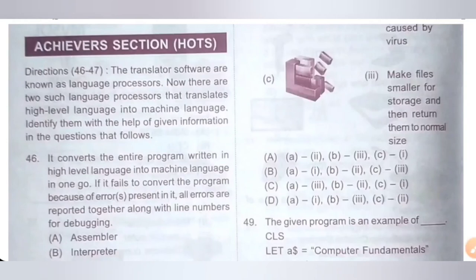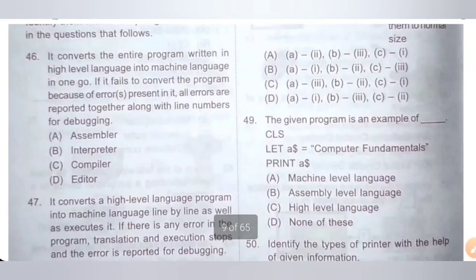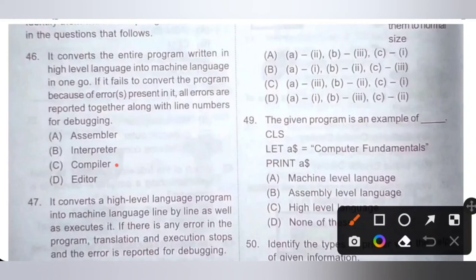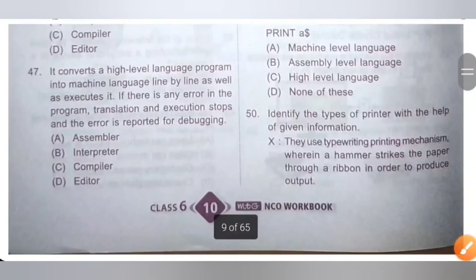Directions for Questions 46 and 47: Translator software is known as language processors. There are two language processors that translate high-level language into machine language. Question 46: It converts the entire program written in high-level language into machine language in one go. If it fails due to errors, all errors are reported together along with line numbers for debugging. Options: A. Assembler, B. Interpreter, C. Compiler, D. Editor. The correct answer is Option C — Compiler.